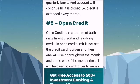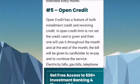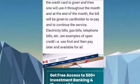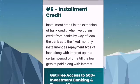Number five is open credit. Open credit has features of both installment credit and revolving credit. The credit card is given and used throughout the month, and at the end of the month a bill is given to the cardholder to repay in order to continue the service. Electricity bills, gas bills, phone bills, etc. are examples of open credit — use first and pay later, available for all.